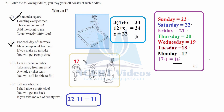Riddle four: tell me who I am — I should give you a pretty clue. You will get me back if you take me out of 22. The question asks: what number should be subtracted from 22 so that we get it back again? By trying, if we subtract 11 from 22 we get 11 back. So 11 is the answer — you subtract it from 22 and get it back. That was the last part of question five.